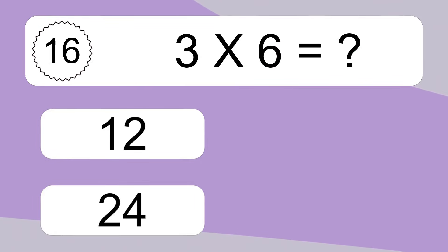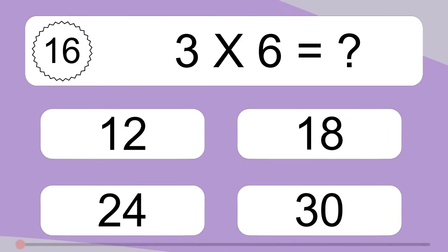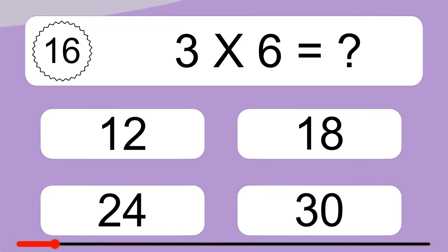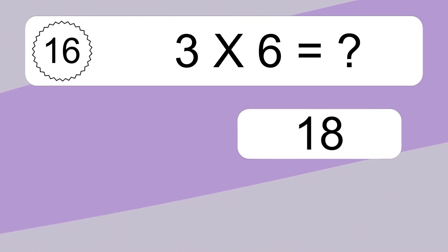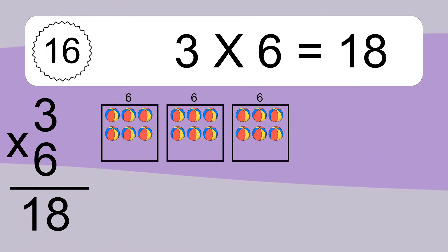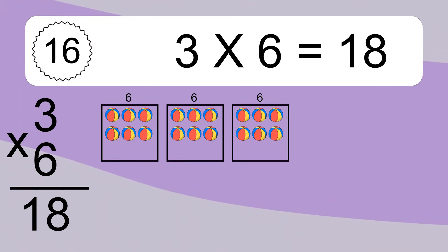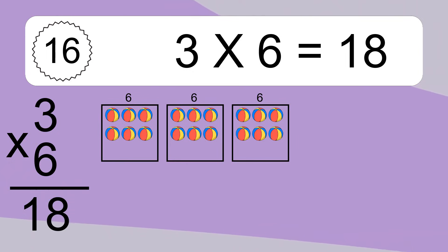3 times 6 equals what? 3 times 6 equals 18. We have 3 boxes and each box has 6 colorful balls inside. If you count all the balls in all the boxes together, you will have 3 times 6 balls. This equals 18 balls.